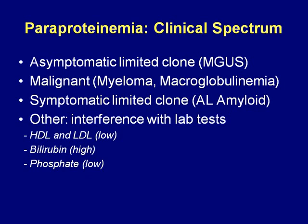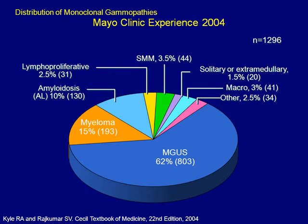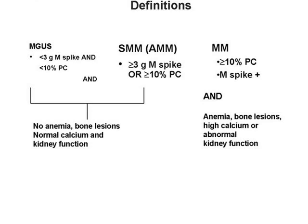There are many conditions that can produce paraproteins. Here's a breakdown from a Mayo Clinic series of more than a thousand patients. MGUS and multiple myeloma constitute a substantial majority of patients with paraproteinemias. Then there are patients with amyloidosis and a variety of other less common conditions. We'll focus on the more common conditions — namely MGUS and multiple myeloma.